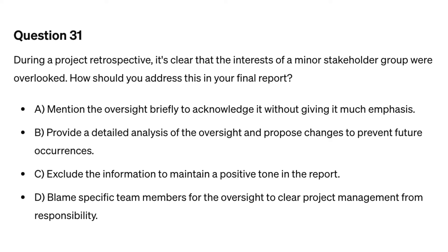Question thirty-one. During a project retrospective, it's clear that the interests of a minor stakeholder group were overlooked. How should you address this in your final report? A. Mention the oversight briefly to acknowledge it without giving it much emphasis. B. Provide a detailed analysis of the oversight and propose changes to prevent future occurrences. C. Exclude the information to maintain a positive tone in the report. D. Blame specific team members for the oversight to clear project management from responsibility.